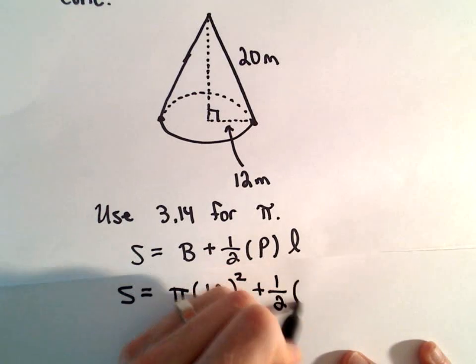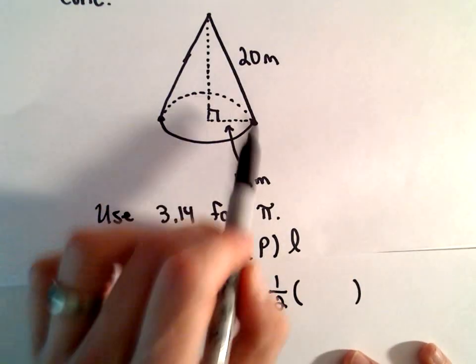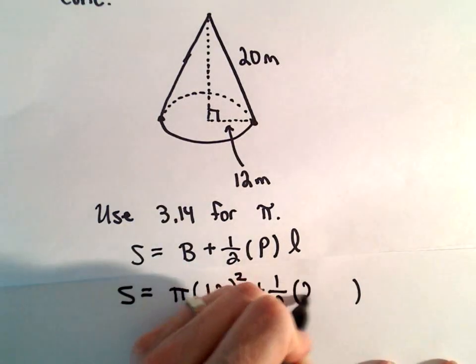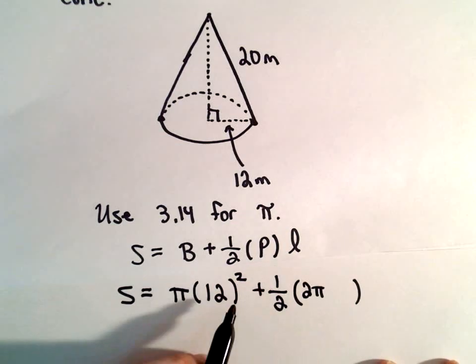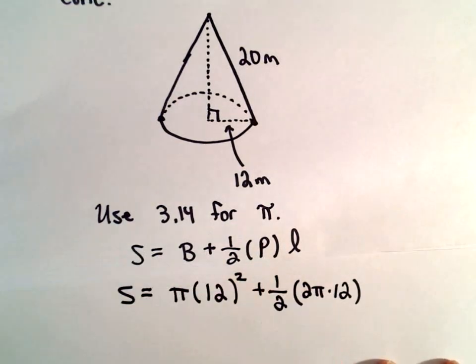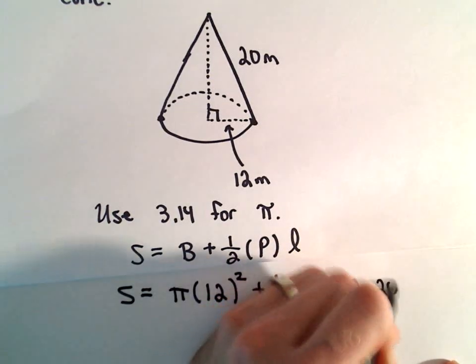plus one-half the perimeter. Since it's a circle, that will be the circumference, so 2 pi times the radius, which is 12. And then we multiply that by the slant height, which is 20.